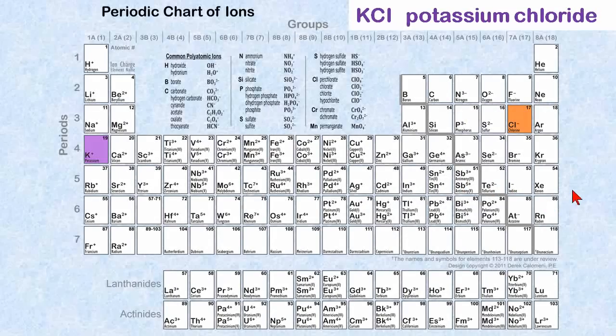Let's go through a couple of other examples. We can look at potassium chloride. Simply use this chart and look up potassium. It has a charge of plus. Chlorine has a negative charge. They come together, and it becomes potassium chloride, KCl.